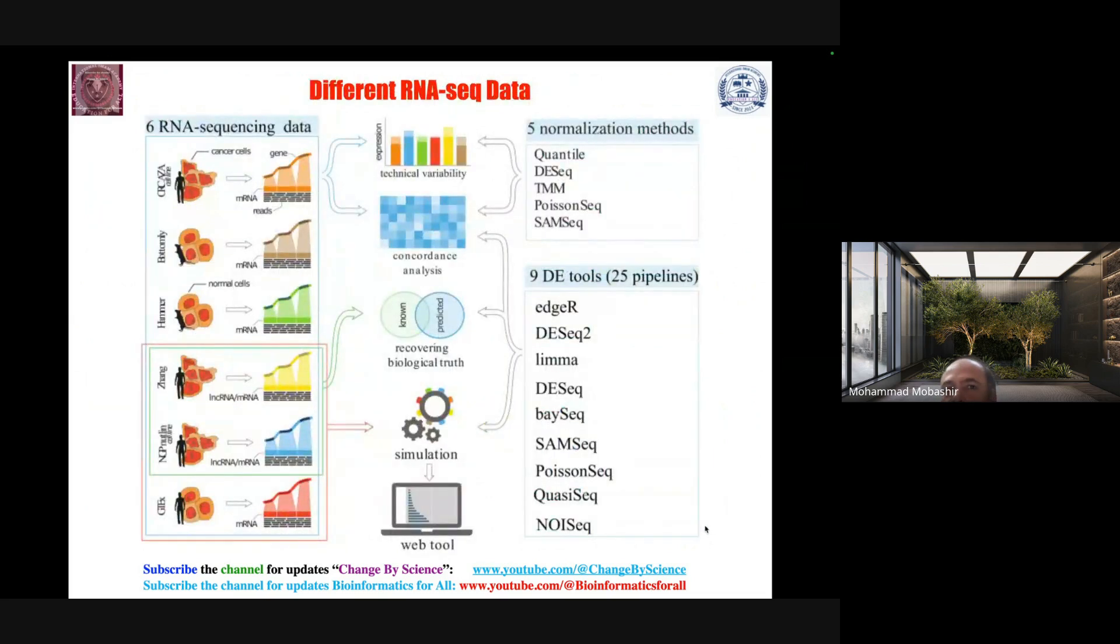Think about different RNA-seq data types. For example, here six RNA sequencing data types are available. What are you going to do? There are different normalization methods, so which method will be suitable for your data? Then differentially expressed genes prediction: there are large numbers. Yesterday I presented DESeq2, edgeR, limma, but there are also limma, DESeq, baySeq, SAMseq, PoissonSeq, QuasiSeq, NOISeq.